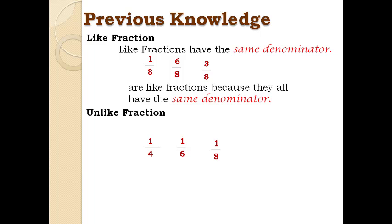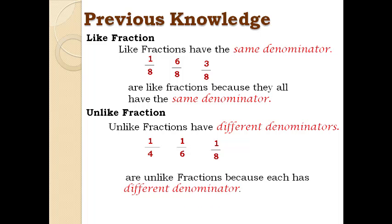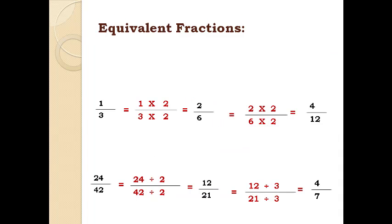Unlike fractions have different denominators. For example, 1 over 4, 1 over 6, and 1 over 8 are unlike fractions because each has a different denominator.